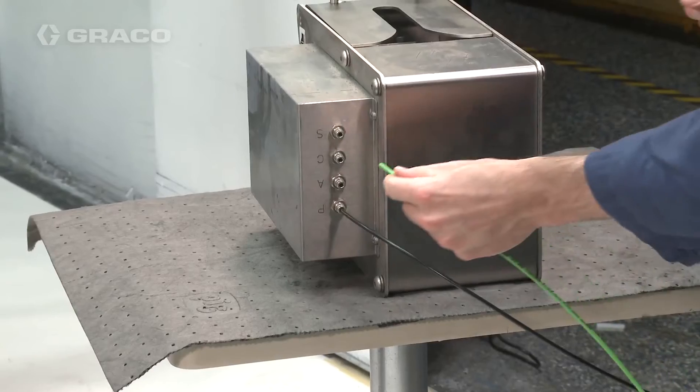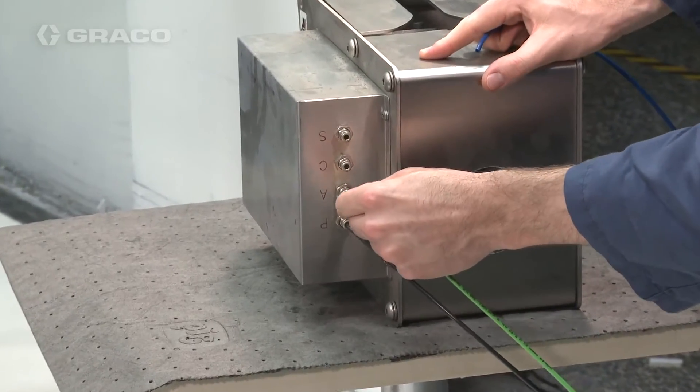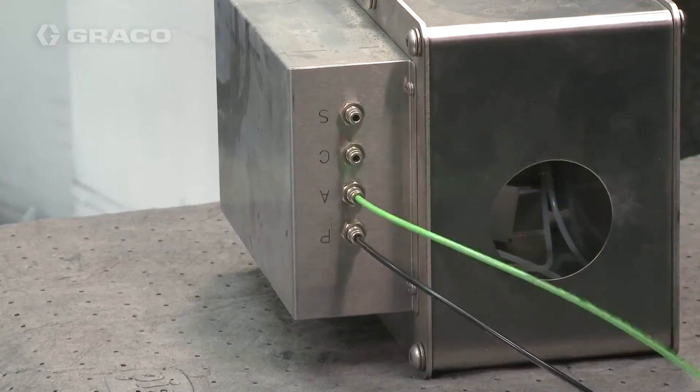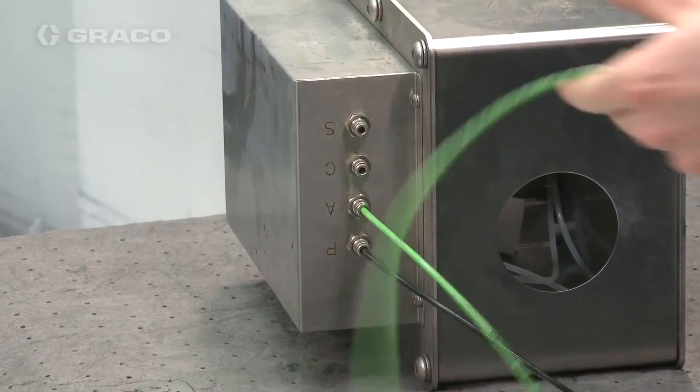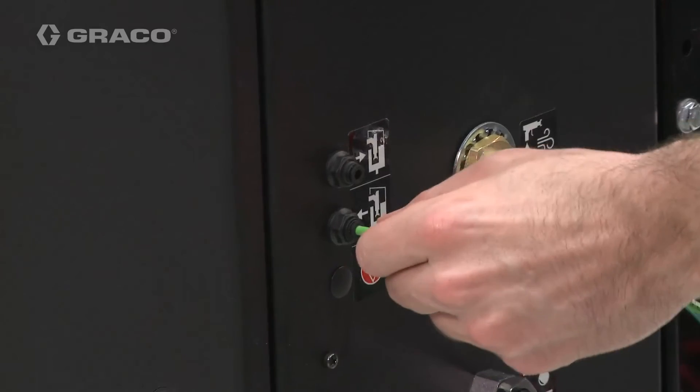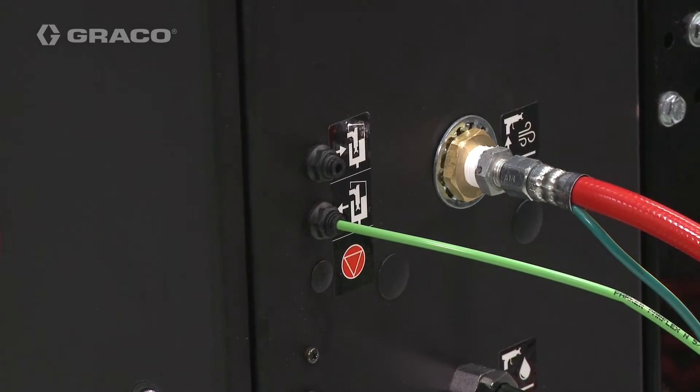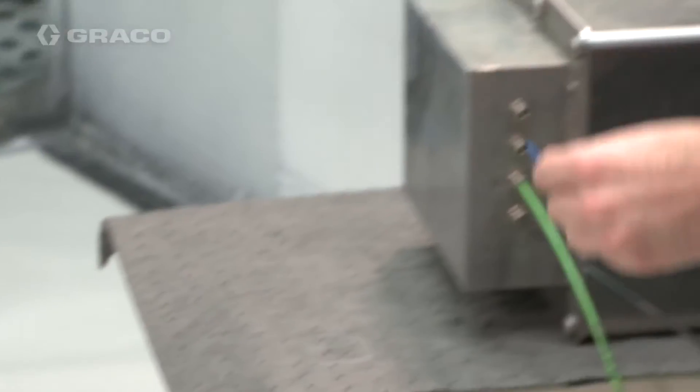Connect gun flush box port A to the bulkhead connection with this symbol on the isolation cabinet. Port A is the output air signal from the gun flush box that indicates a gun is in the box and the lid is closed.